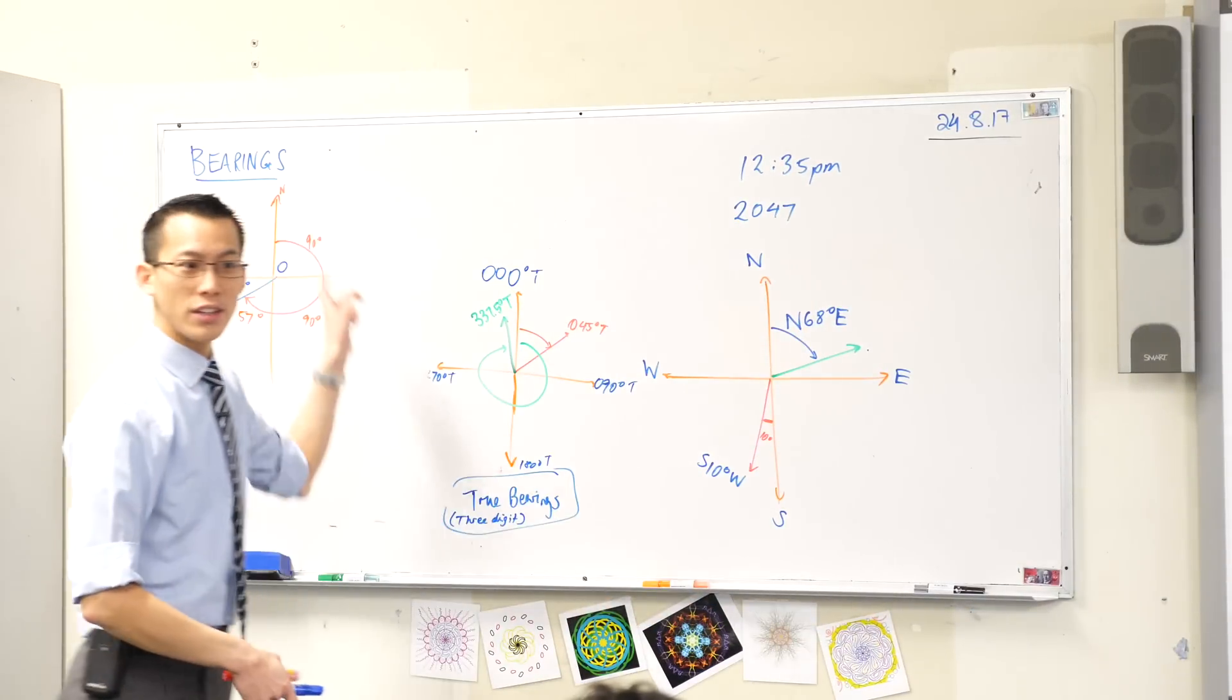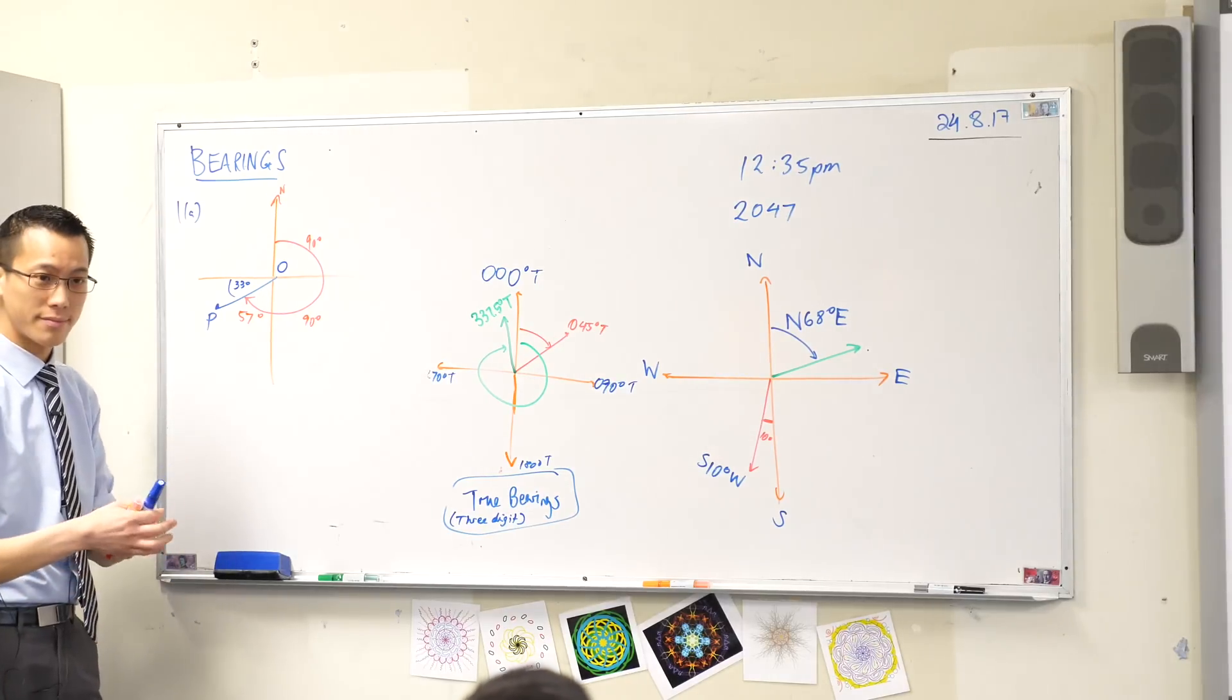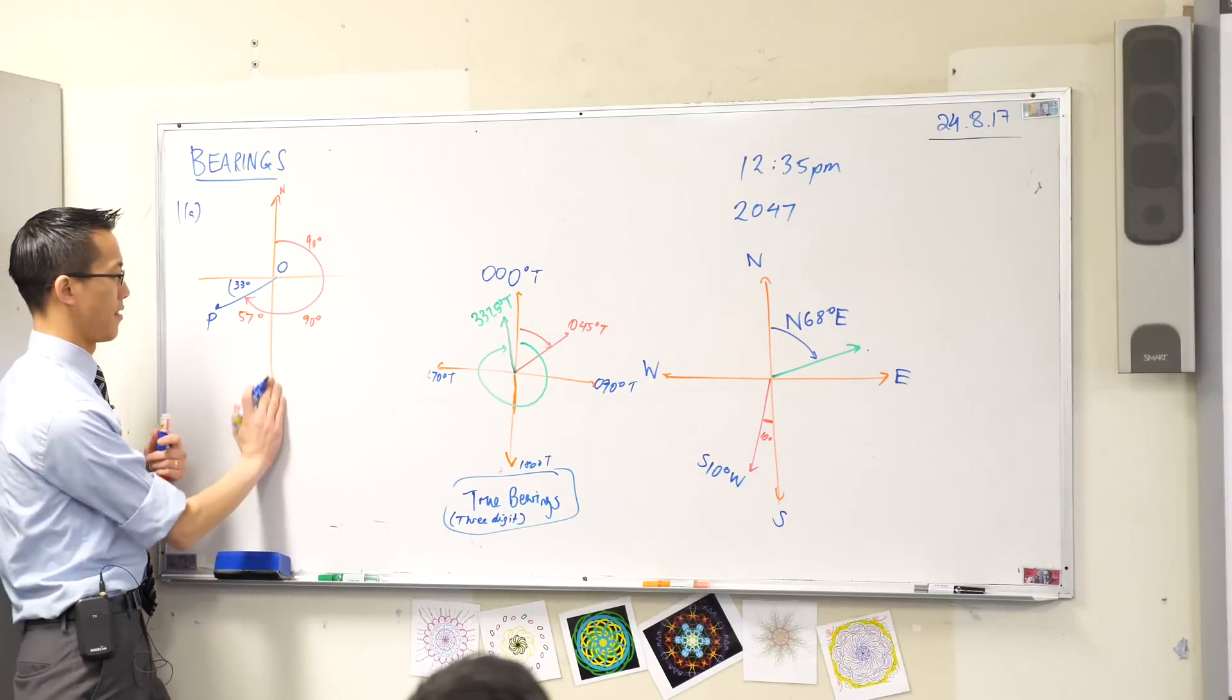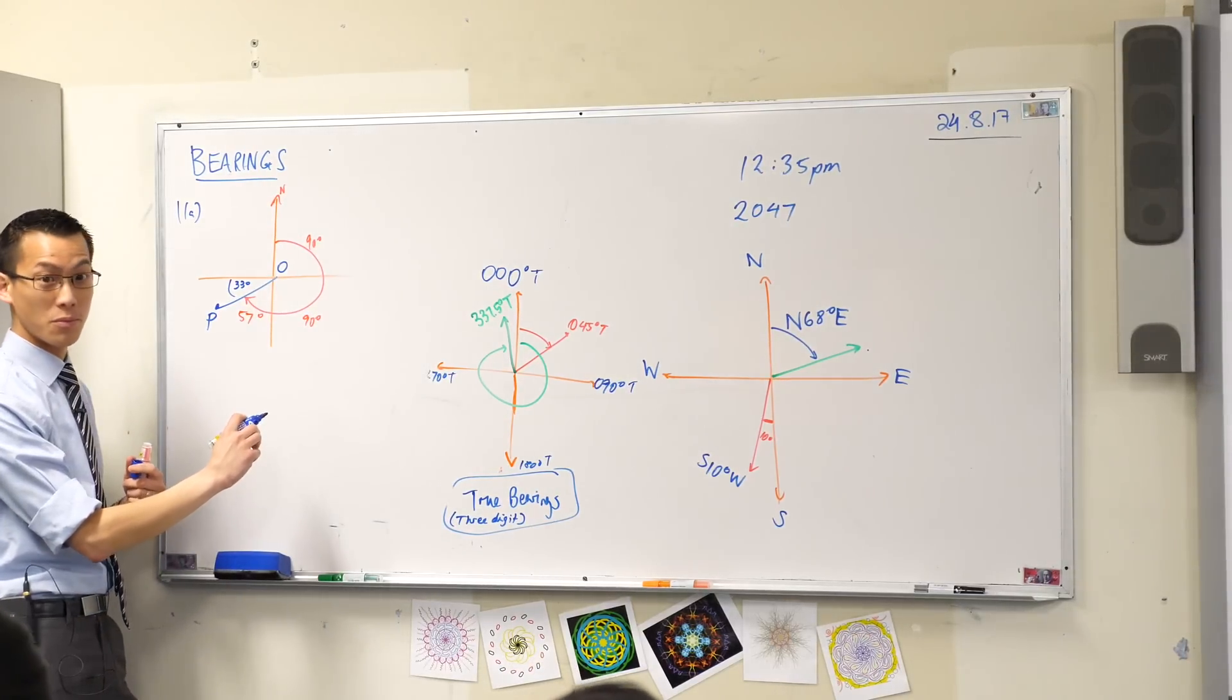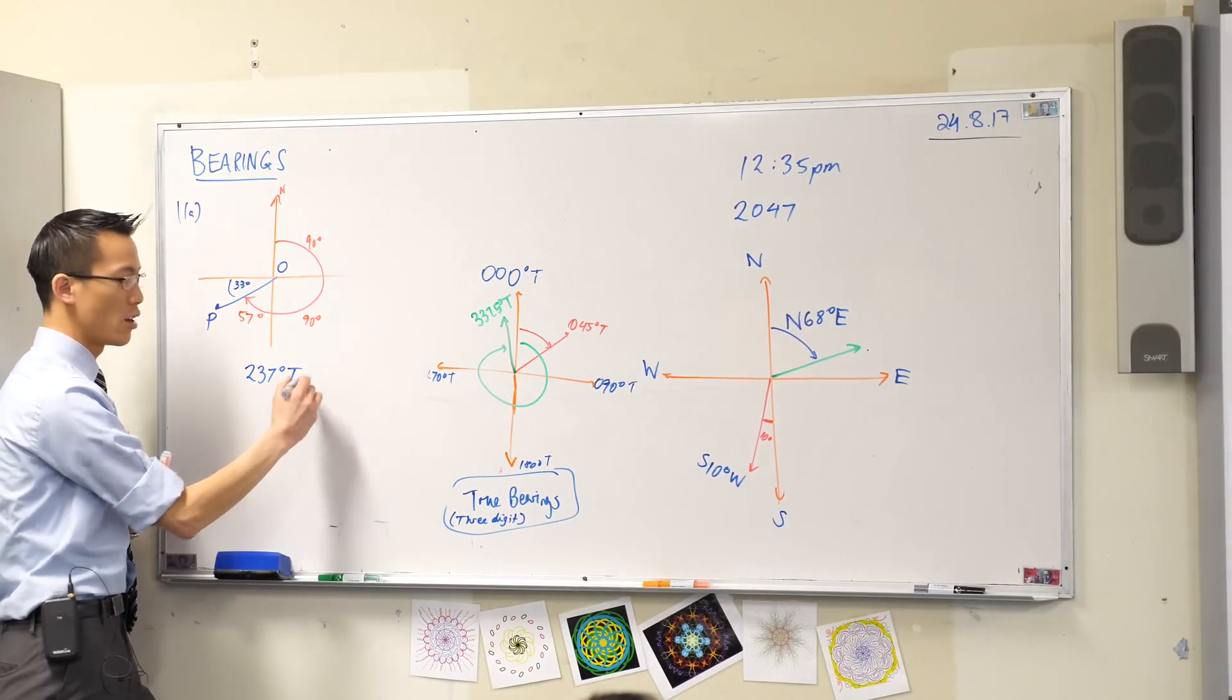So I've got a total angle there. 90, 90, 57. What's the bearing? What's the bearing? 237 degrees true.